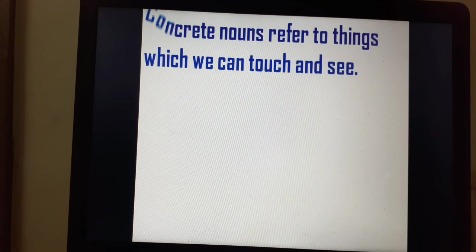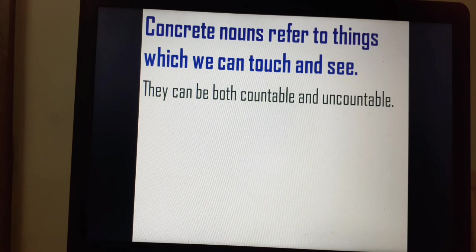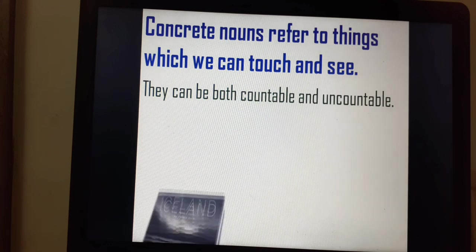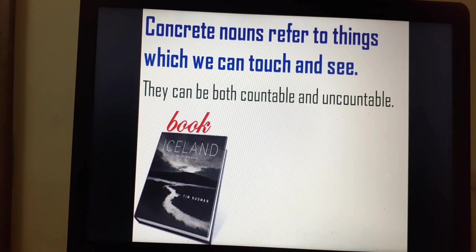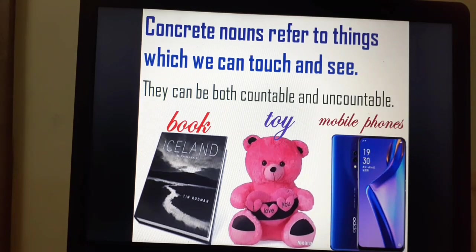Concrete nouns refer to things which we can touch and see. They can be both countable and uncountable. For example: book — we can count it, we can see it, we can touch it. Toy — we can see it, we can touch it, and it is countable. Mobile phone. So book, toy and mobile phone are concrete nouns, as we can touch and see them. They can be both countable as well as uncountable.